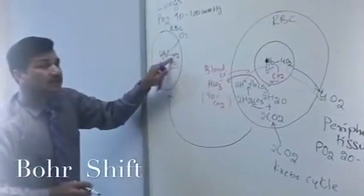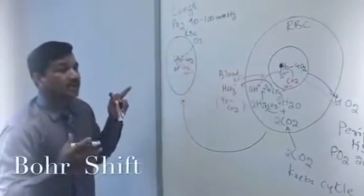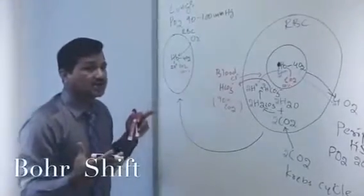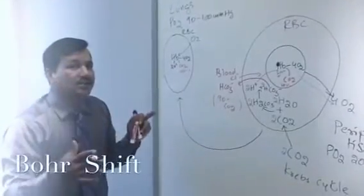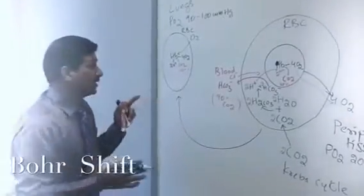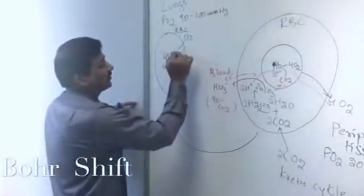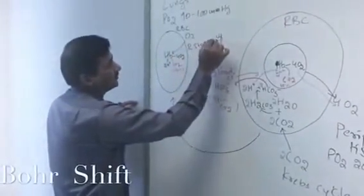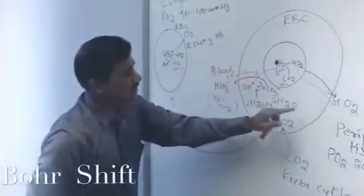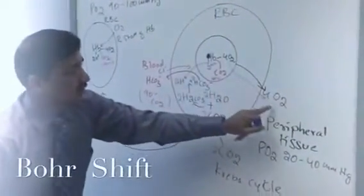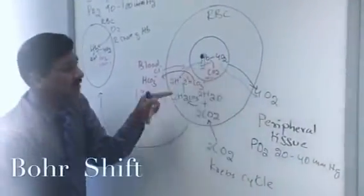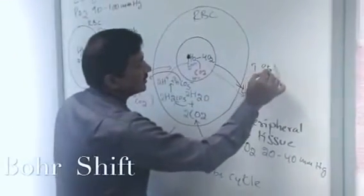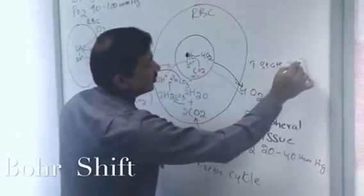When the four molecules of oxygen bind to hemoglobin, hemoglobin undergoes a conformational change and gets into the R state — the relaxed state of hemoglobin. Whereas here in the peripheral tissue, when the oxygen molecule is released and the protons are binding, hemoglobin gets into the T state of hemoglobin.